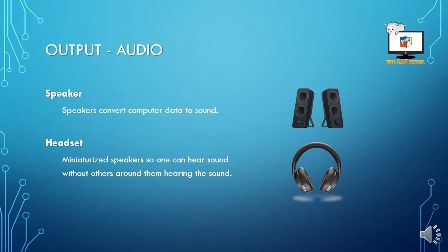Output. The most common type of output is audio output, aside from visual output from your screens. Speakers convert computer data to sound — it is as simple as that. Headsets are essentially mini speakers strapped to your head. The one advantage headsets have over speakers is that you can hear the audio but others around you cannot.